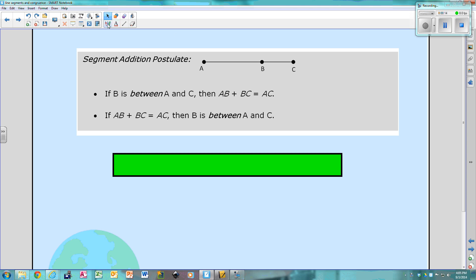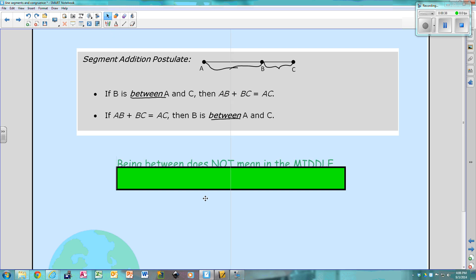The segment addition postulate states that if B is between A and C, then AB, so this piece, plus this piece, equals the whole piece. So in other words, AB plus BC equals AC, then B is between A and C, so make sure you write this down.